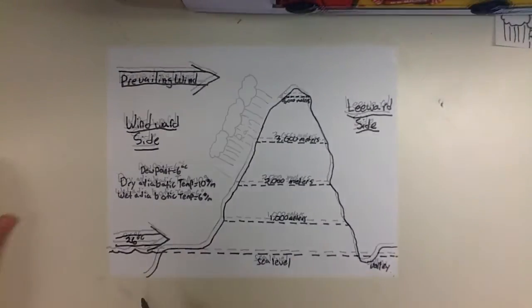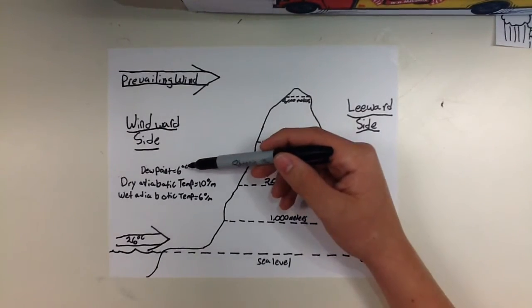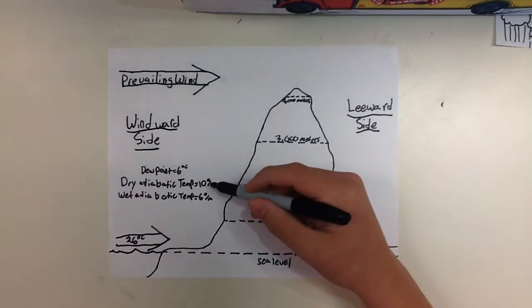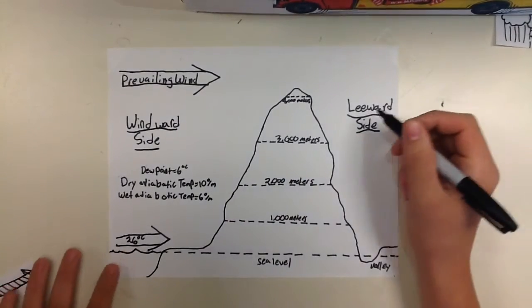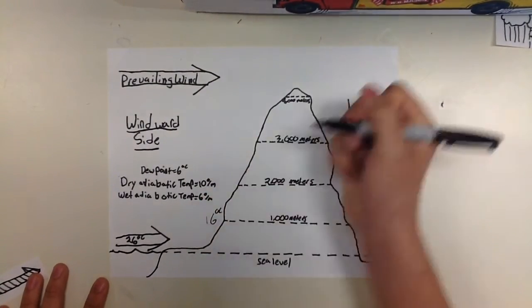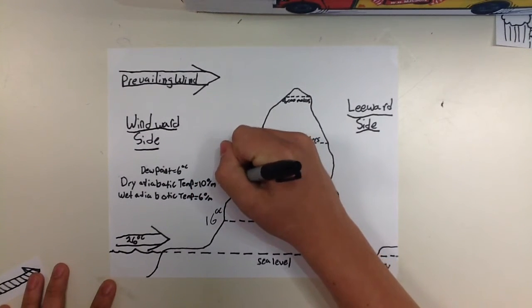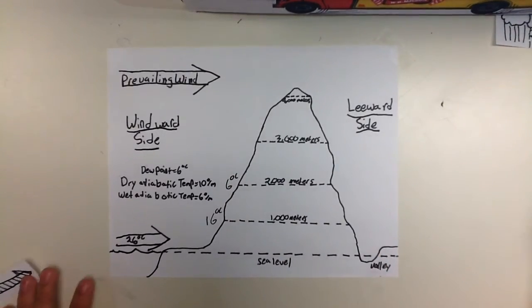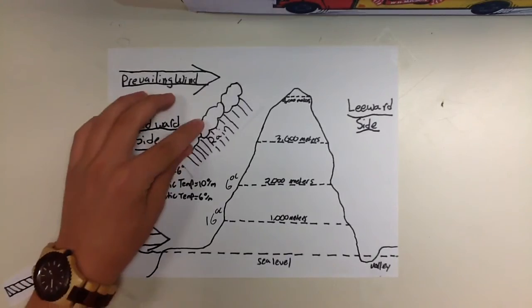We start out at a temperature of 26 degrees Celsius. Because this is not yet at our dew point temperature, we need to start by subtracting 10 degrees every thousand meters. So 26 minus 10 is 16 degrees Celsius. Because it's not 6 yet, subtract one more, so it would be 6 degrees Celsius. And now we have reached our dew point. That's when it begins to rain or precipitate.